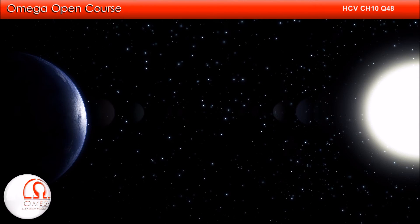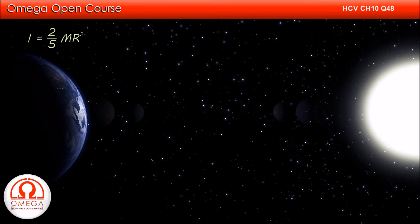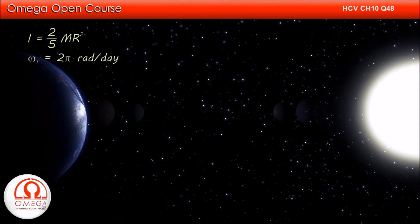While spinning, the Earth is in pure rotation about its axis. We can consider Earth to be a uniform solid sphere of mass m and radius R. The moment of inertia of a solid sphere about its axis is given by 2/5 mR². Earth completes one rotation in one day, therefore its angular speed is 2π radians per day.